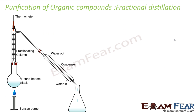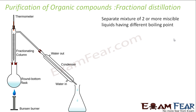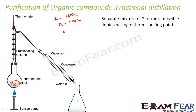Let us talk about fractional distillation. In fractional distillation, we try to purify mixtures which have different boiling points. For example, I have a mixture of three components A, B, and C. A has a boiling point of 100 Kelvin, B is 150 Kelvin, and C is 200 Kelvin. Here also we boil it and we have a fractionating column to purify.